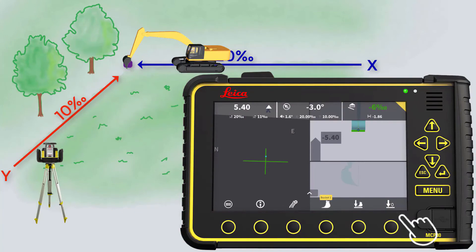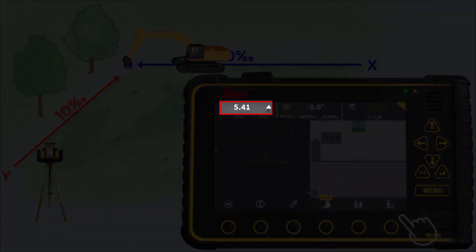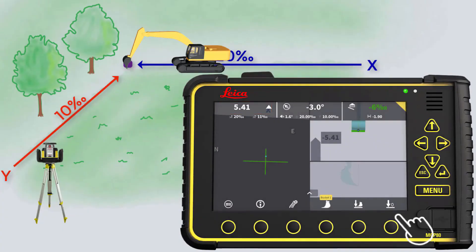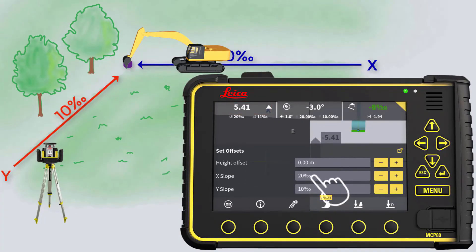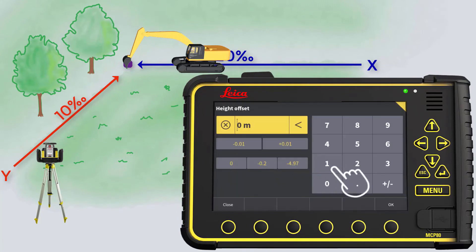Place your tool point on the reference spot. Read the height difference between your tool point and the laser beam. If the reference spot is at the desired height, you can simply enter this value into your height offset and you are ready to start working.